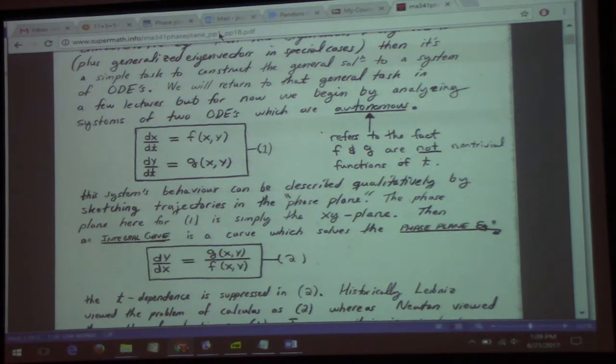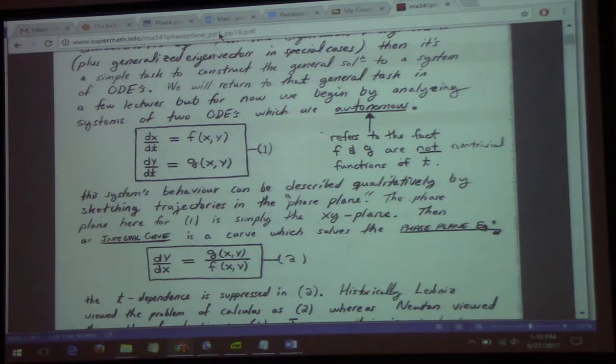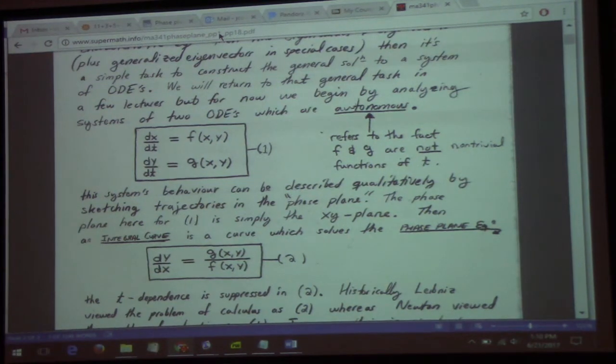So again, this is chapter 12 in the text. I think 12.1 to 12.4 is the large discussion here. We're looking at a slightly more general situation than just linear systems of differential equations. A generalization would be dx/dt equals f(x,y), dy/dt equals g(x,y). This is called an autonomous system.